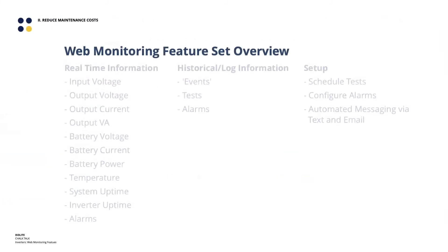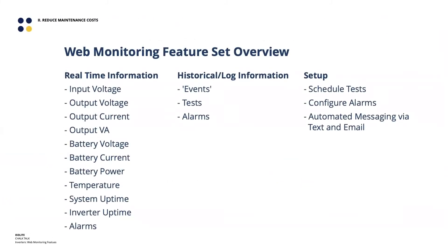The feature set of the web monitoring portal is pretty comprehensive — it covers basically everything the inverter is capable of reporting. From a real-time perspective, that includes input and output voltage, input and output current, the actual connected load attached to the device, battery health information, system temperature, uptime — how many hours the inverter has been active — and any current alarms like a tripped circuit breaker. Anything that can be reported in real time can also be reported up to this web portal.